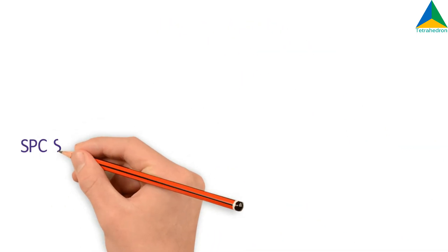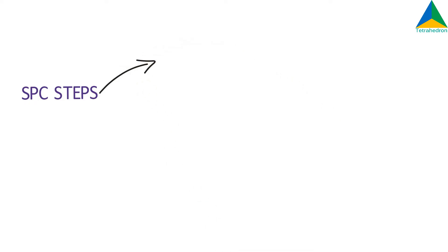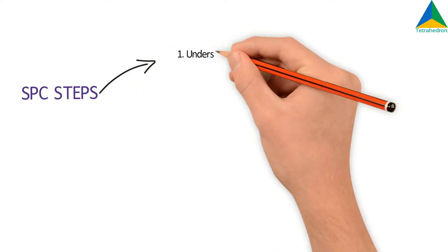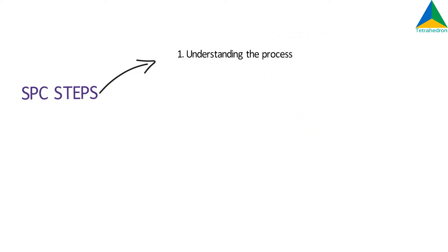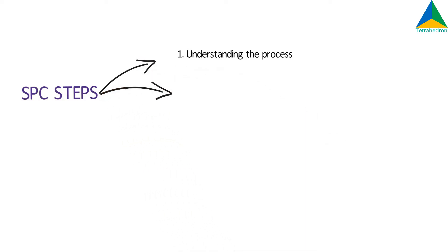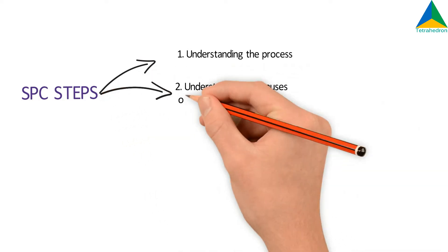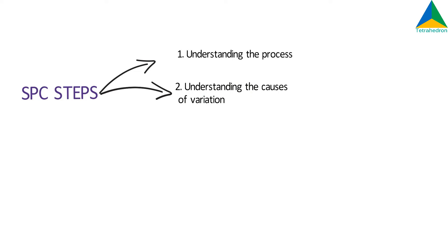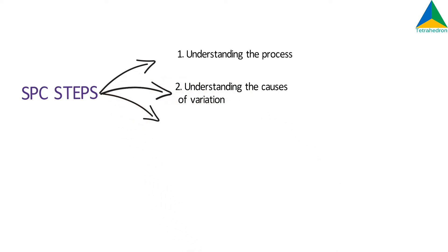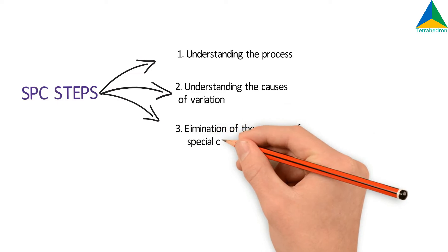Steps to implement Statistical Process Control. Step 1: Understanding the Process. Step 2: Understanding the Causes of Variation. Step 3: Elimination of the Sources of Special Cause Variation.